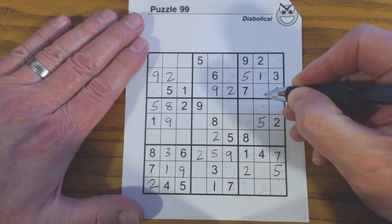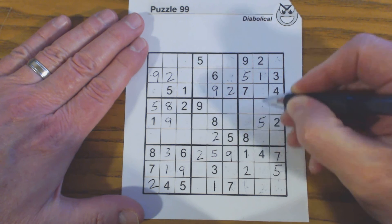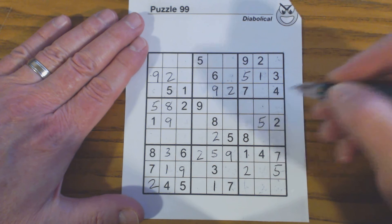And we couldn't have solved that without these 6, 8 twins here. So that's a good example of solving, helping solve a column that has twins in it.